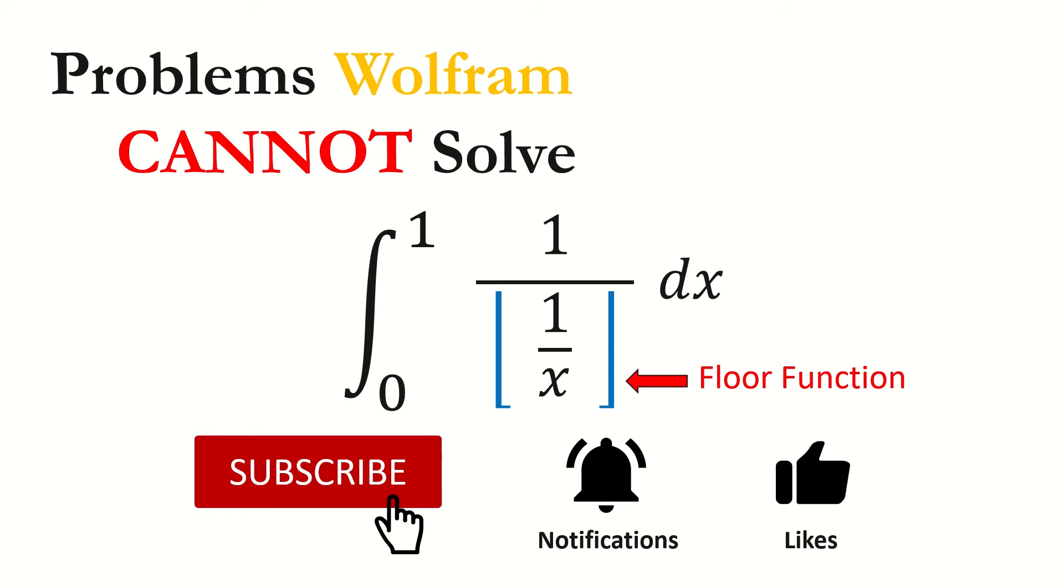So let's get started. First, let's look at the output from Wolfram Alpha. Here we can see Wolfram is able to recognize the floor function, and also it can generate the graph for the integrand function, but it fails to solve it.